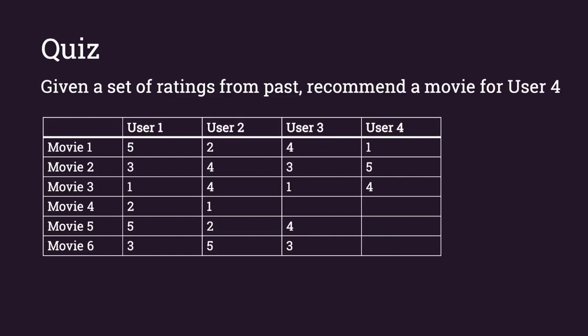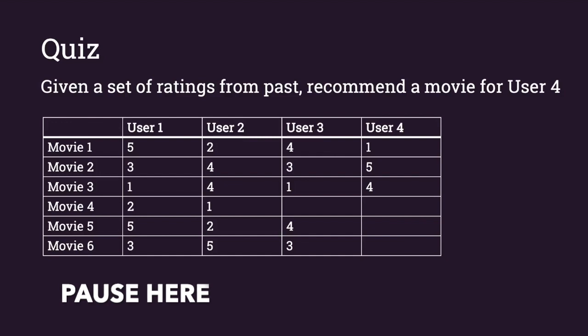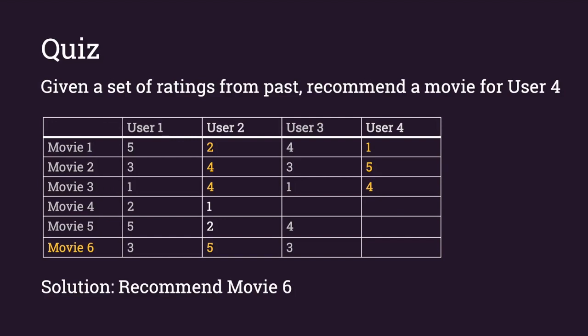Based on the given ratings, can you recommend movies to user 4? Using user-to-user collaborative filtering, user 2 is the most similar user to user 4, and because user 2 likes movie 6, we should recommend movie 6 to user 4 as well. Feel free to try out the item-to-item approach and drop your answers in the comments. This is good, but how do we do this for hundreds of thousands of items? We need to quantify the measure rather than just eyeballing it.